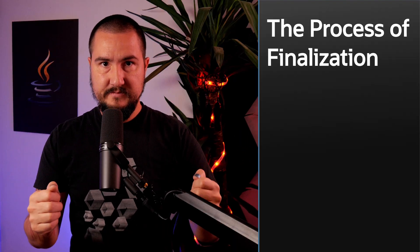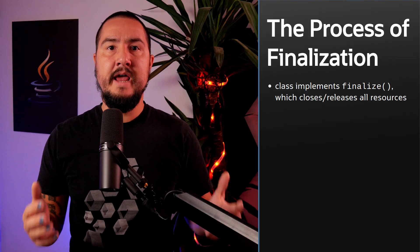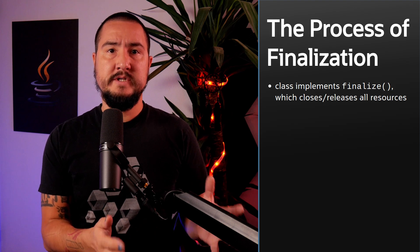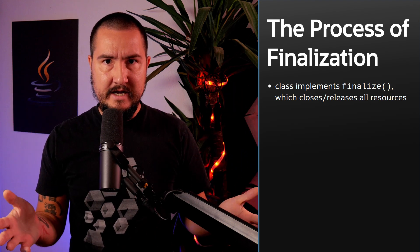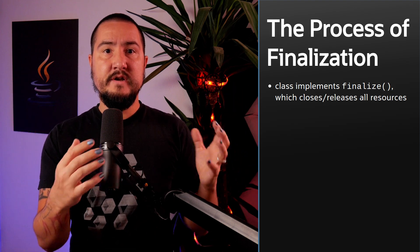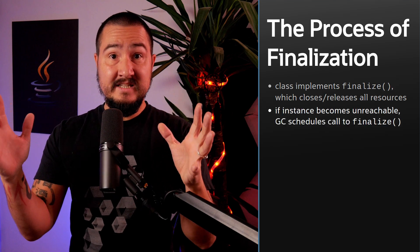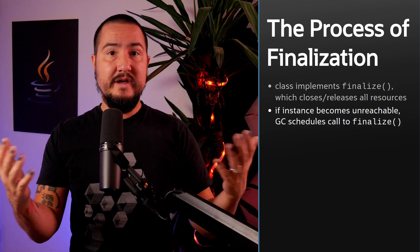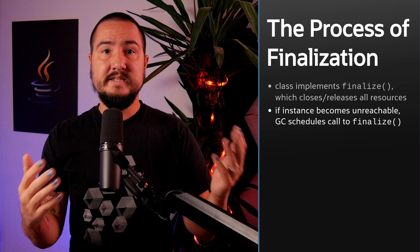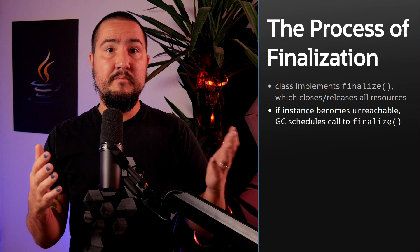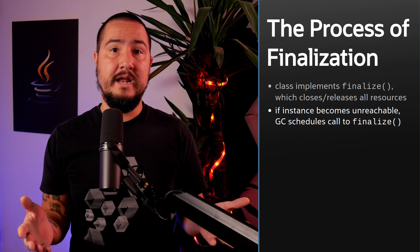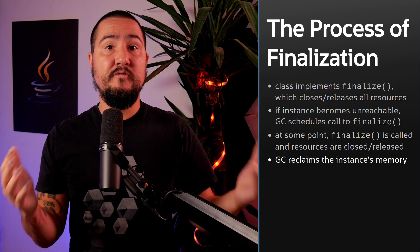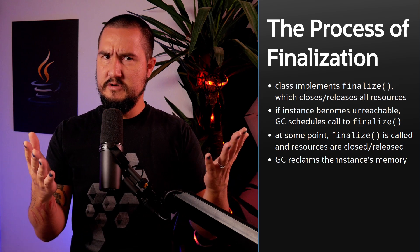All in all, here's how it works. A class that handles a resource, say WebSockets, will implement the protected method finalize, called a finalizer, and therein close the resource. If an instance of that class becomes unreachable, the garbage collector will figure that out and schedule to call the finalize method at some point before it reclaims the object's memory, thus releasing the resource before the object disappears. Sounds good?